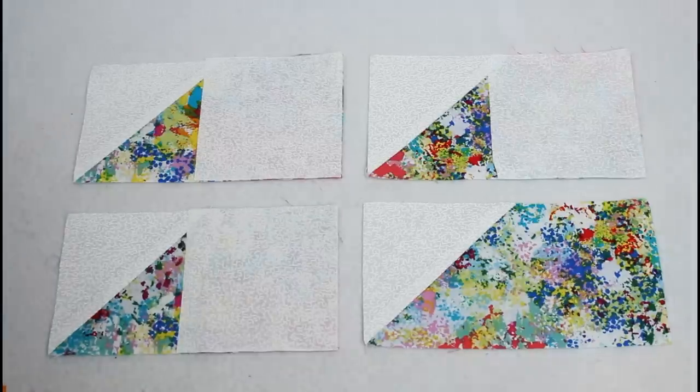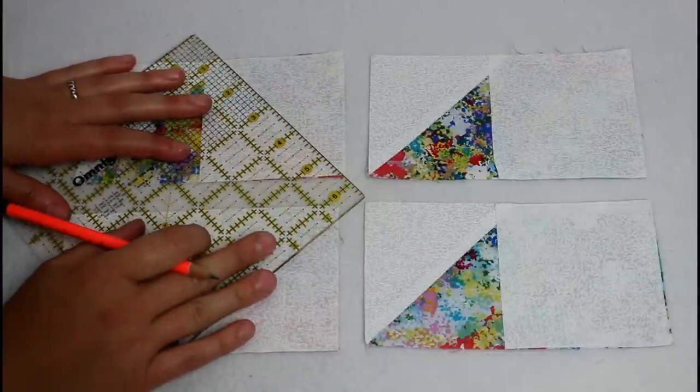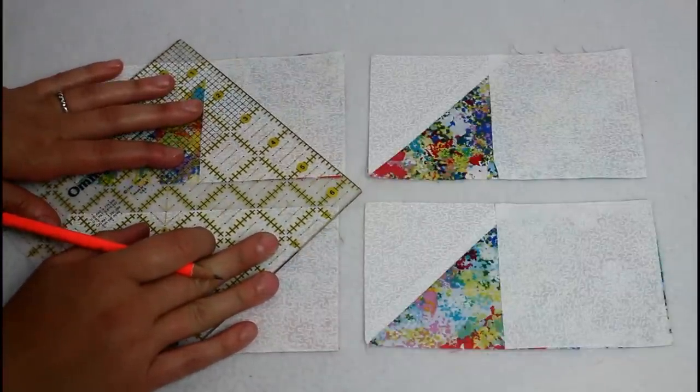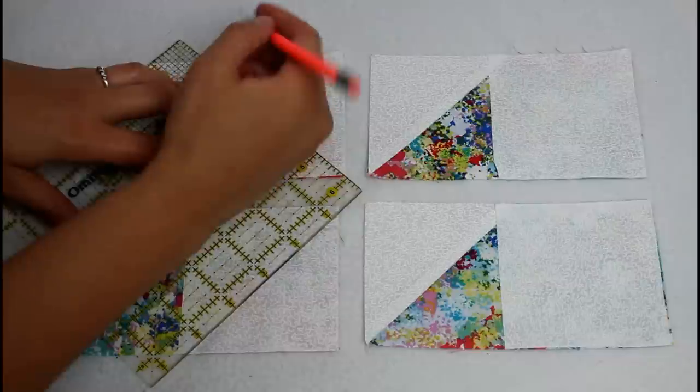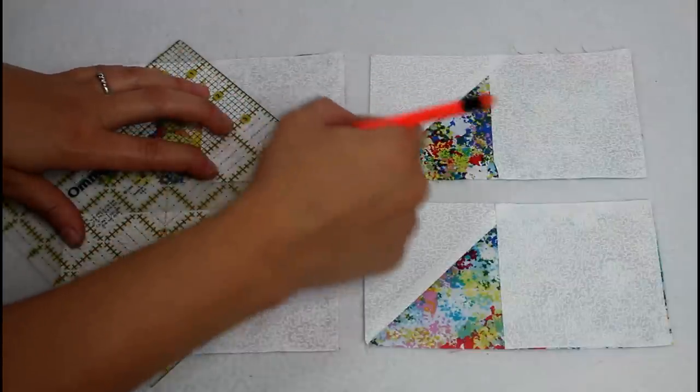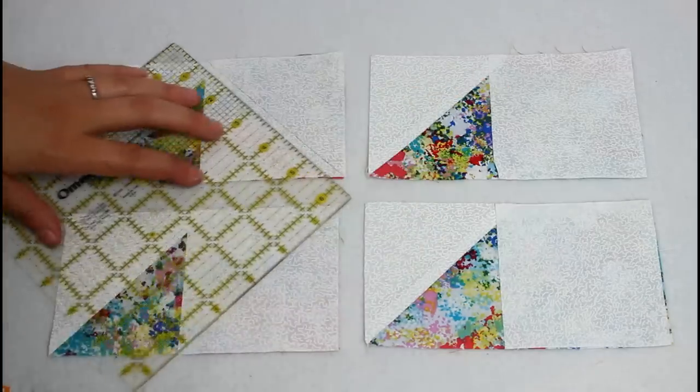Now add another white square to the right side of each rectangle. It will overlap just a bit with the first at the top center and that is totally fine. That area will be in the seam allowance later.